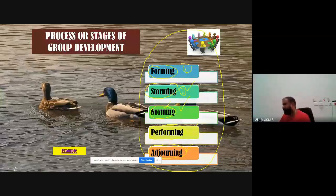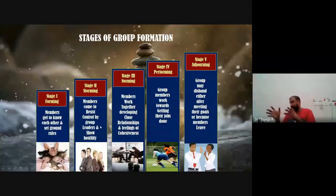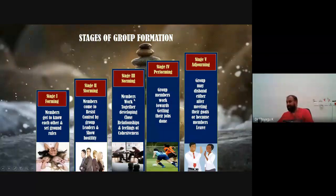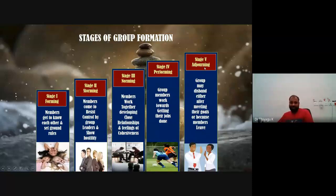In stage two, storming, members resist control by group leaders and show hostility to each other. In the case of norming, group members can divide the work, develop close relationships, and focus may develop at this stage. Based on norming, they go into performing mode. Finally, when they understand their success, they may leave the group — that is called adjourning.